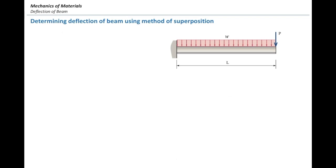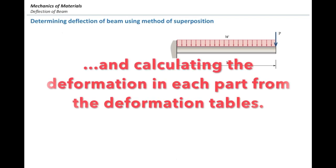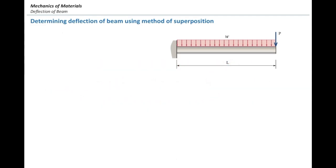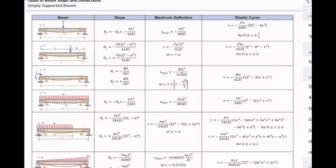The idea of superposition method is simply splitting the beams into simpler parts. There are three columns in each table.